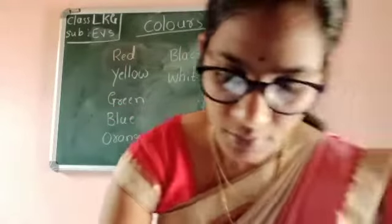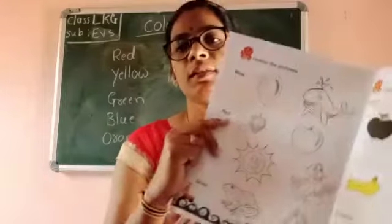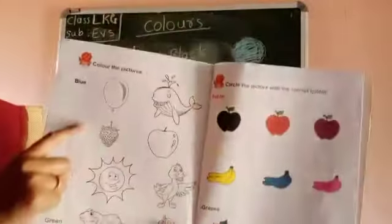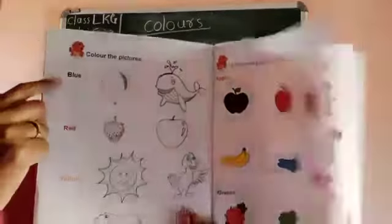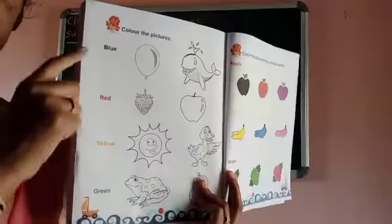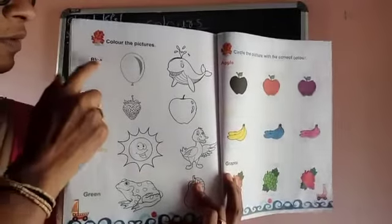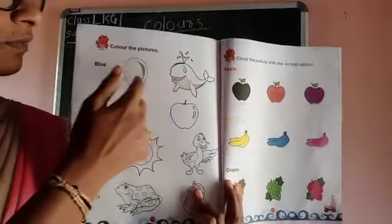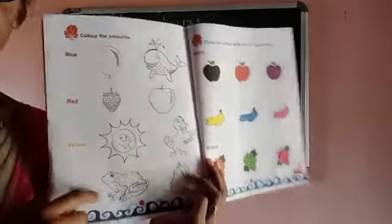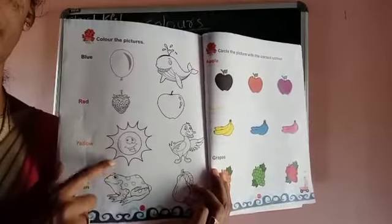Next, page number 174. Look at here — there are some pictures given. Color the pictures and mention the color name: blue, red, yellow, green. You color the blue here, next red, next yellow, next green. Do this work at home, take a photocopy, and send it to my number.